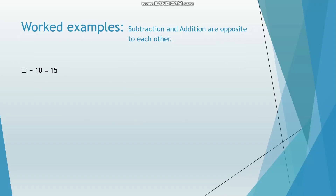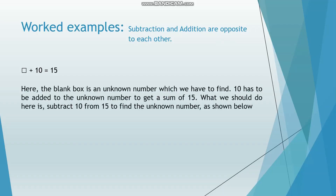A blank box representing an unknown number plus 10 is equal to 15. Here the blank box is an unknown number which we have to find. 10 has to be added to the unknown number to get a sum of 15. What we should do here is subtract 10 from 15 to find the unknown number. The value of the unknown number will be equal to 15 minus 10, which is equal to 5.